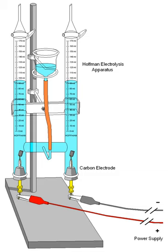In chemistry and manufacturing, electrolysis is a technique that uses a direct electric current to drive an otherwise non-spontaneous chemical reaction. Electrolysis is commercially important as a stage in the separation of elements from naturally occurring sources such as ores using an electrolytic cell.